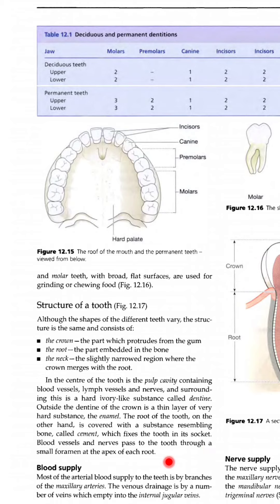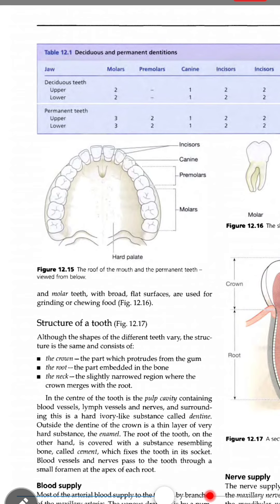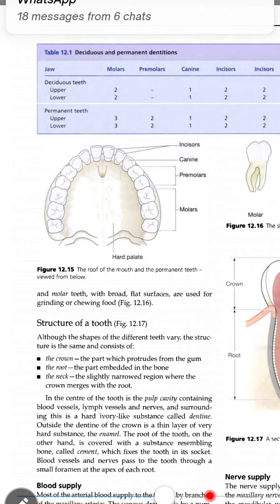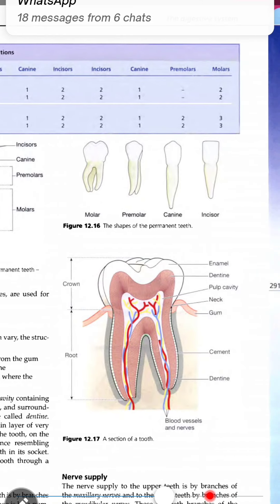Blood vessels and nerves pass to the tooth through a small foramen at the apex of each root. Most of the arterial blood supply to the teeth is by branches of maxillary arteries. The venous drainage is by a number of veins which empty into the internal jugular veins. इसकी जो blood supply है उसमें arteries और veins — these are the same जो tongue और mouth में present होती हैं, वही teeth में भी present होती हैं।